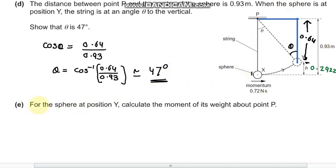Part (e) says for the sphere at position Y, calculate the moment of its weight about point P. At this position here is the weight, which is mg.